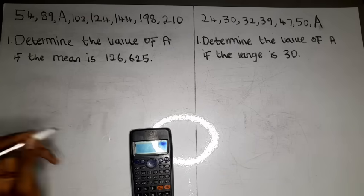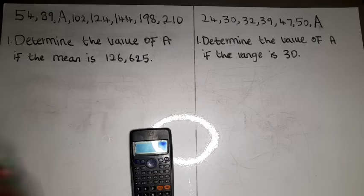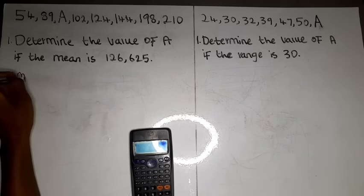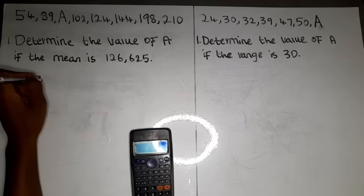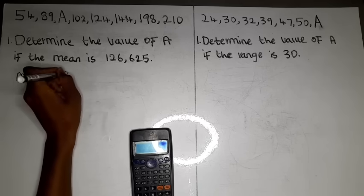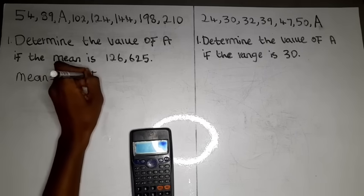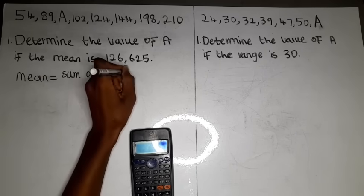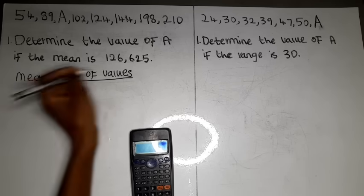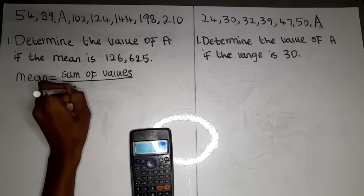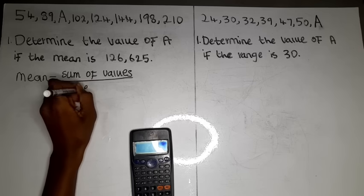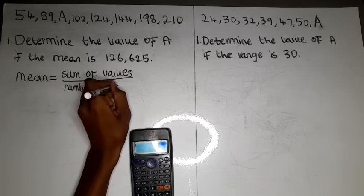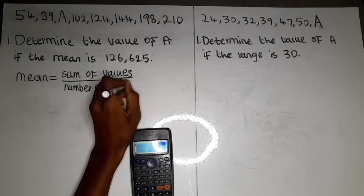Since we have been given the mean, we are going to use the formula for calculating mean in order to find the missing value. We all know that the formula for calculating mean is: mean equals the sum of values divided by the number of values.